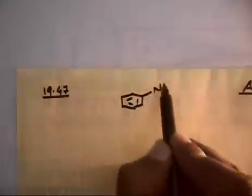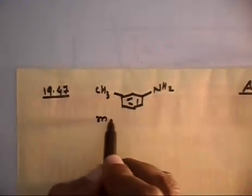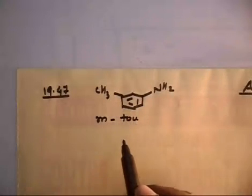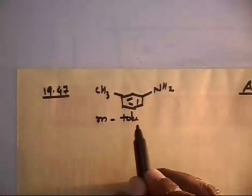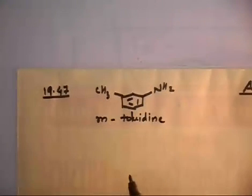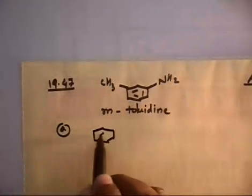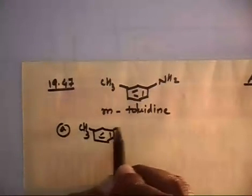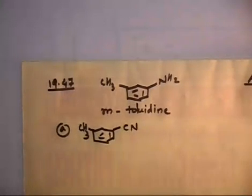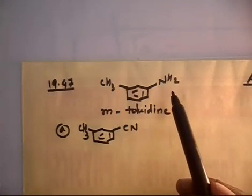So NH2 is at meta position and I have CH3. This is metatolidine. If this compound — how will you carry out the following conversion? So from this you have to prepare first CH3 and then CN. These all reactions basically go by diazonium cation. You can easily make the diazonium cation from the following compound.